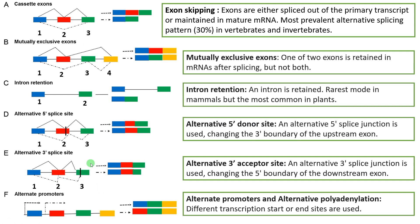The final two types are alternative promoters and alternative polyadenylation. In alternative promoters, a gene has two or more promoters at different transcription start sites; transcription can begin at either promoter, so the sequence between them is either included or excluded, leading to different proteins. In alternative polyadenylation, the poly-A tail is added at different end sites on the mRNA, so different end sites lead to the production of different protein isoforms.